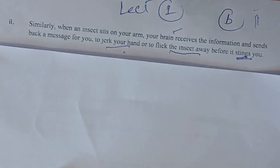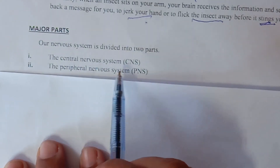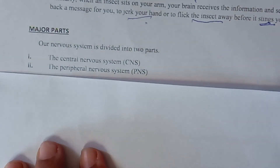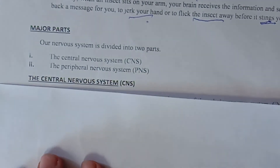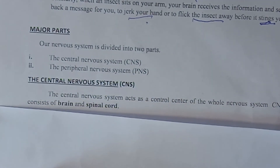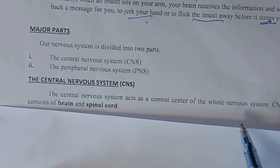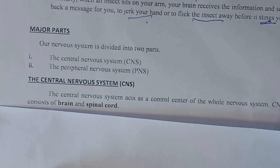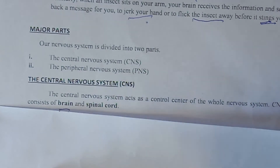The major parts of the nervous system are the central nervous system (CNS) and the peripheral nervous system (PNS). The central nervous system acts as the controlling center of the whole nervous system. It consists of two main parts: the brain and the spinal cord.